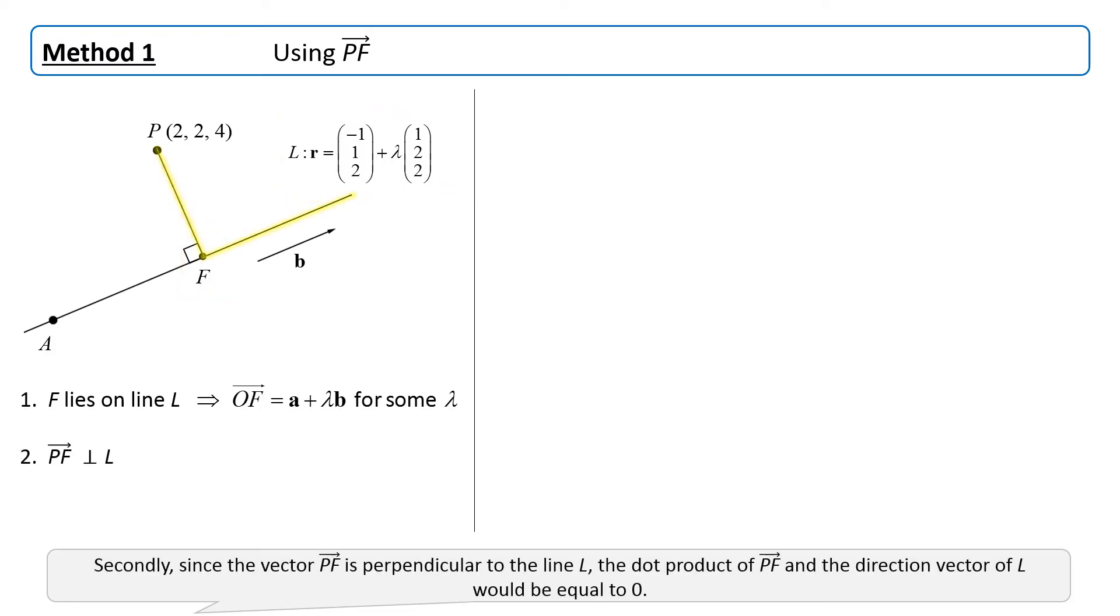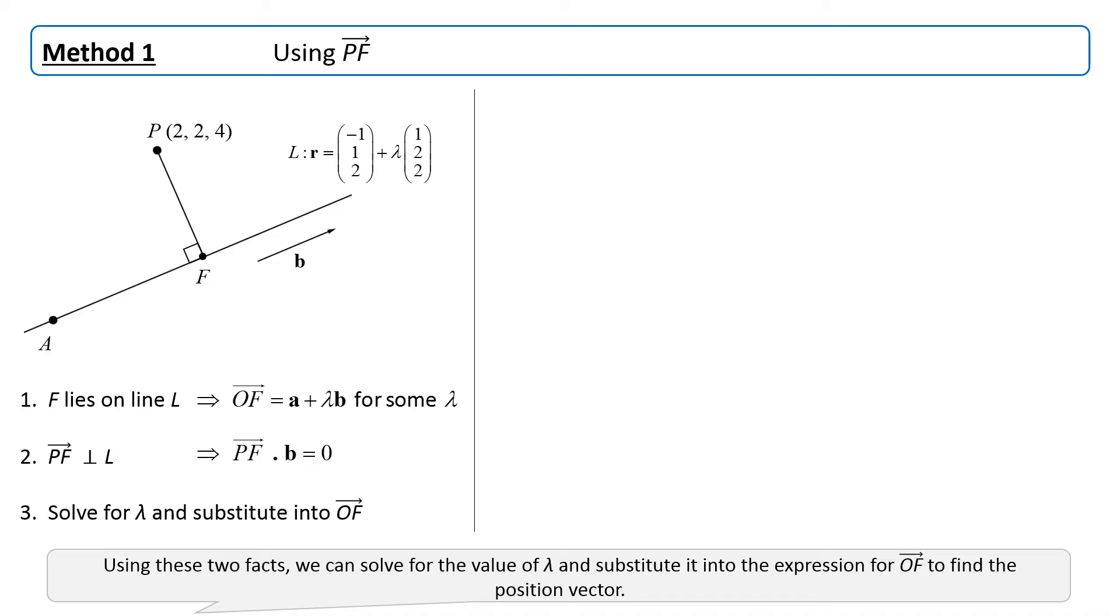Secondly, since the vector PF is perpendicular to the line L, the dot product of PF and the direction vector of L would be equal to 0. Using these two facts, we can solve for the value of lambda and substitute it into the expression for OF to find the position vector.